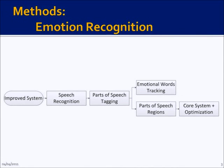In addition to analyzing how one speaks, we also analyze what words are being said. We apply speech recognition to get the words, and then use parts of speech tagging to get subject, verb, and object regions. We create separate models of frequency and energy ranges for each of these three regions and keep track of the tone of the speech based on the negative and positive words used.